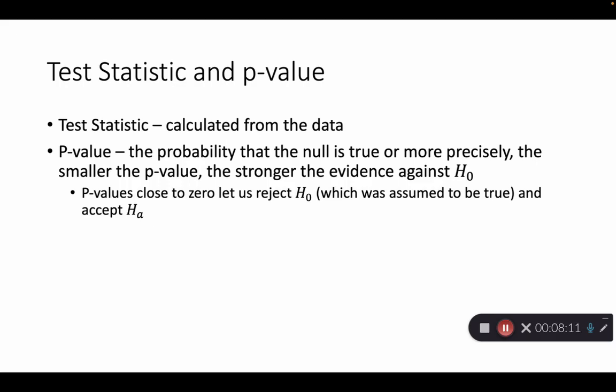And then if we have a really small value of p, then we get to reject the null hypothesis, which was assumed to be true, and we accept the alternate hypothesis as a result. So it's kind of, spend some time digging in on that because it seems kind of weird and backwards possibly to some people.